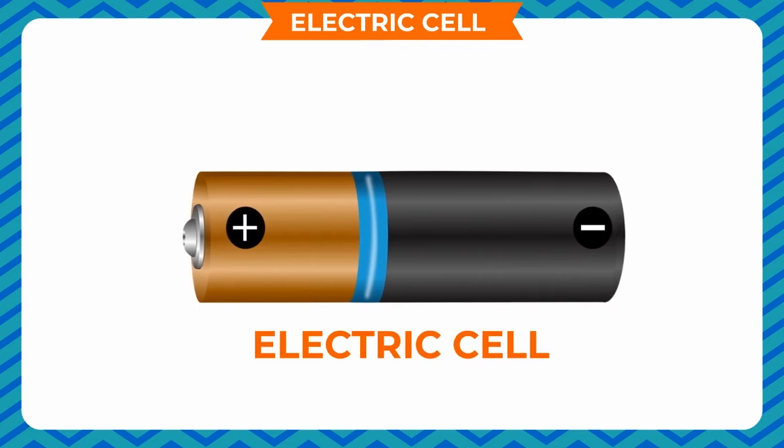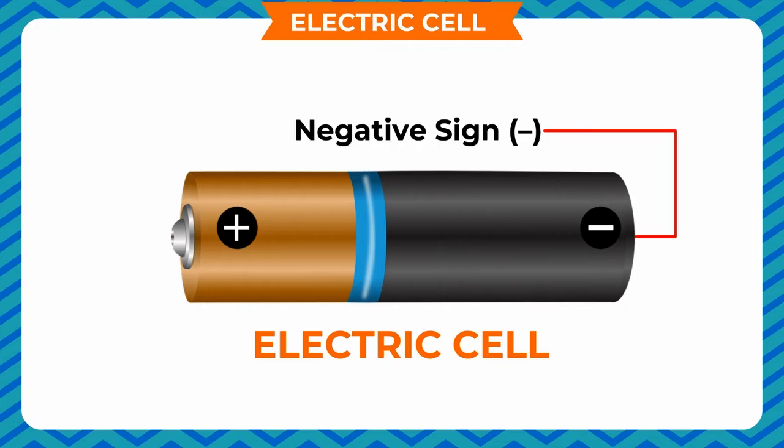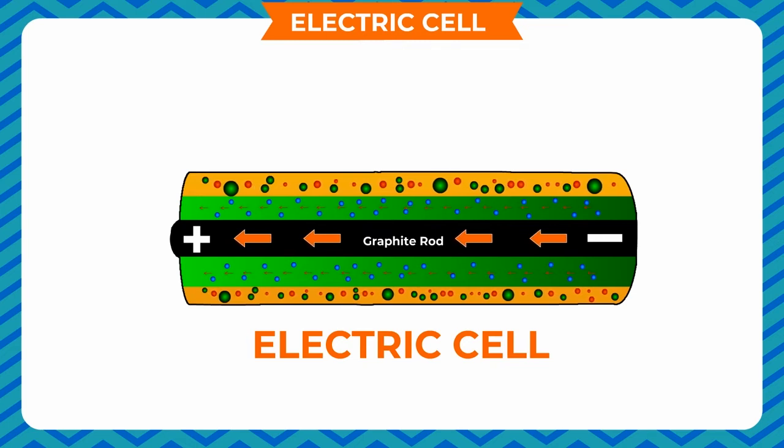If you have seen an electric cell carefully, it has a metal cap on one side and a metal plate on the other side. A positive sign is marked on the metal cap called the positive terminal of the electric cell, and a negative sign on the metal plate side called the negative terminal of the cell. Every electric cell has these two terminals. An electric cell consists of many chemicals inside it. A chemical reaction occurs inside the electric cell, resulting in the flow of electrons from the negative terminal to the positive terminal of the cell.